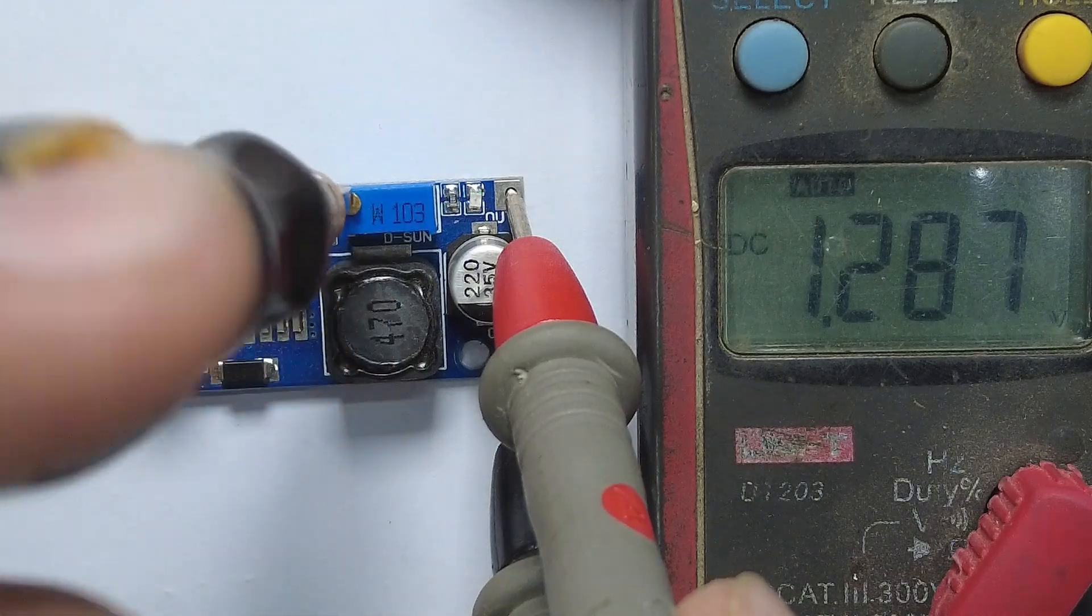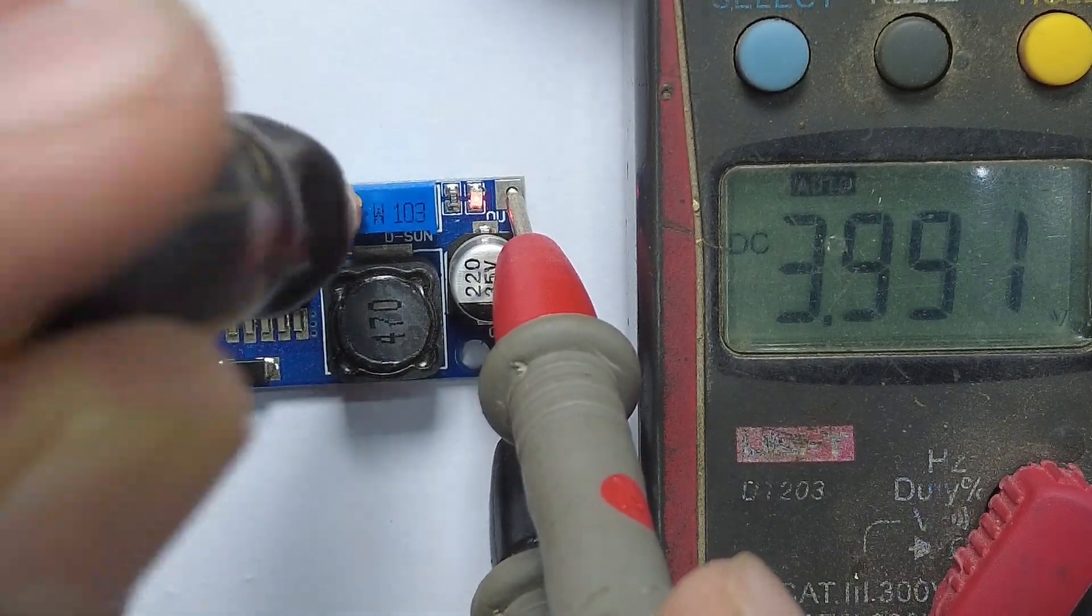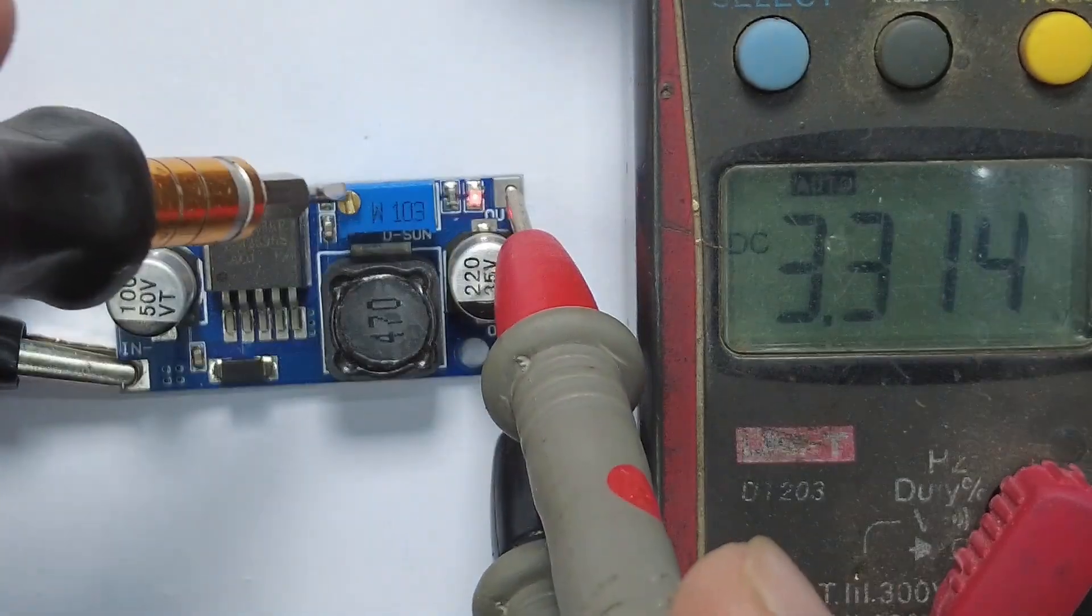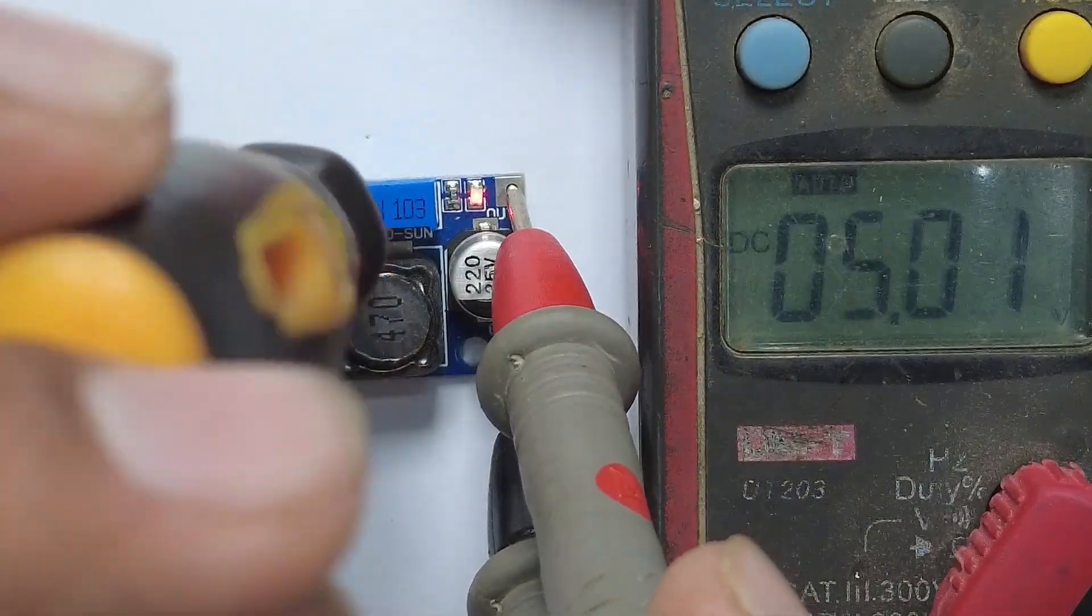Set your desired output voltage and connect the load. To adjust the output voltage, rotate the blue potentiometer. To increase the voltage, rotate clockwise. To decrease the voltage, rotate counterclockwise.